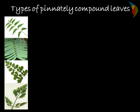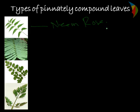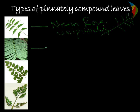Now we can go into details of pinnately compound leaves. The pinnately compound leaves are also of many types. Like in the case of neem or rose, the leaves are on both sides of the midrib — that is called unipinnately compound. The second type is bipinnately compound.